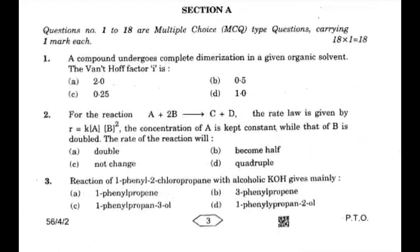Let's see the MCQ section. A compound undergoes complete dimerization in a given organic solvent. Then the van't Hoff factor will be 0.5.